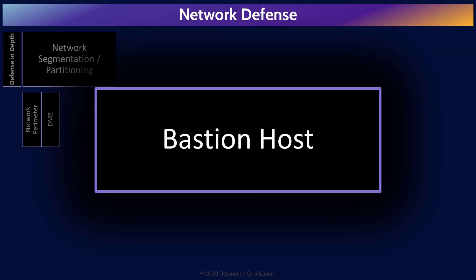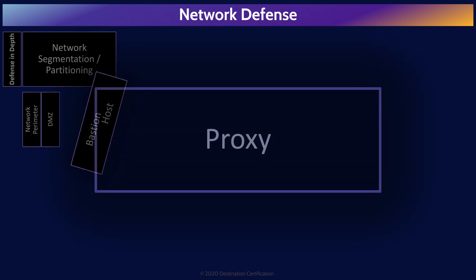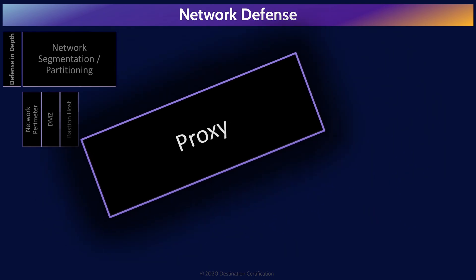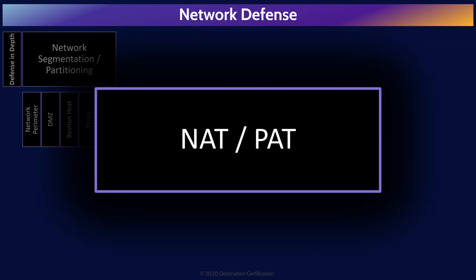Bastion hosts are computers and servers that are specifically configured to withstand attacks. Bastion hosts are typically public-facing servers, like a web server. A proxy is a server located between two devices that acts as an intermediary, such that all traffic between the devices must pass through the proxy. This allows the proxy to read, filter, and control the communications, and even hide the devices behind the proxy. NAT and PAT are examples of proxies.